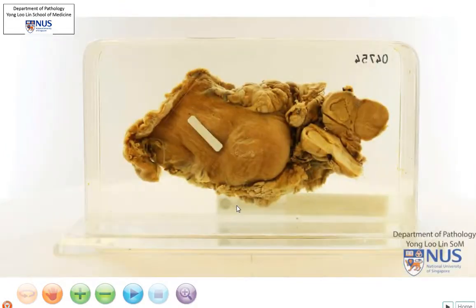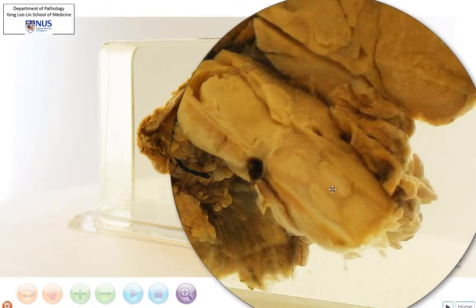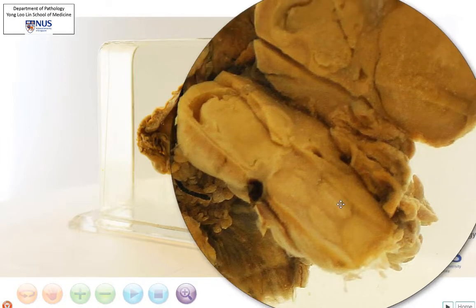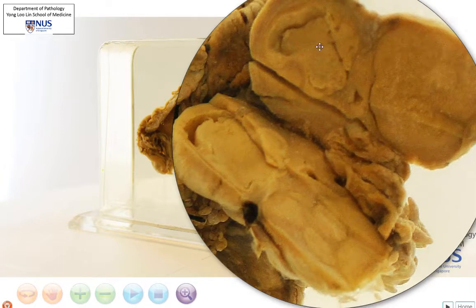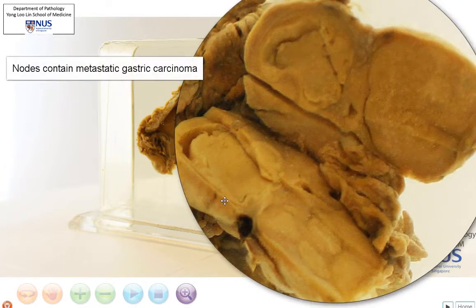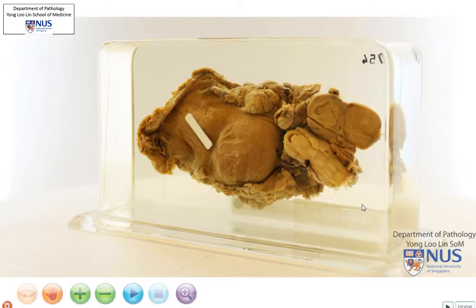When we talk about malignant tumors, we are always concerned about how far they spread. In this case, we are able to see some lymph nodes here, and in fact several lymph nodes that have been stuck together — they are enlarged and matted. This is what we describe lymph nodes as when they are stuck together, and we can clearly see that there are fleshy tumor deposits within these lymph nodes. So this tumor has already metastasized to the lymph nodes, and the nodal staging will be at least N1.